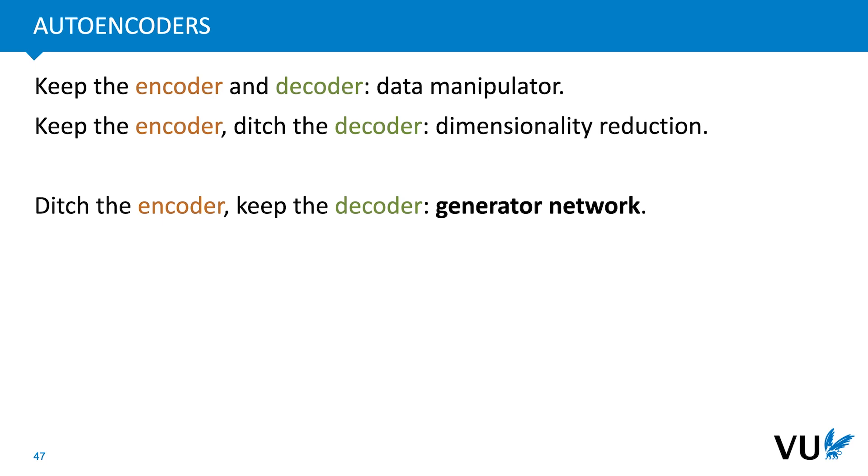So, what we get out of an autoencoder depends on which part of the model we focus on. If we keep both the encoder and the decoder, then we get a network that can help us manipulate data in this way. We map data to the latent space, tweak it there, and then map it back out of the latent space with the decoder. If we keep just the encoder, we get a powerful dimensionality reduction method. We can use latent space representations as the feature for another model that does not scale well to a high number of features.